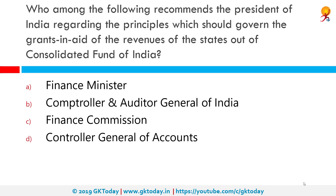Who among the following recommends to the President of India the principles governing grants and aids of revenues to states out of the Consolidated Fund of India? The correct answer is the Finance Commission. The key role of the Finance Commission in India is to act as an instrument to divide proceeds of divisible taxes between the states and the Union government, and to determine the principles of such allocations.